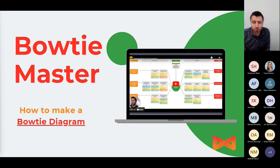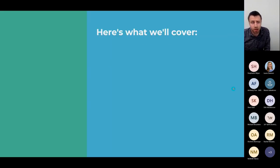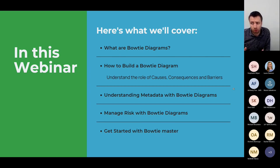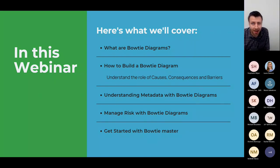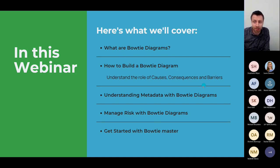I know that you'll get a lot out of what we've got in store, so please ask any questions into the Q&A or into the chat and I'll pick these up at the end. Here's our run through of the day: we're going to dive straight in and build a bowtie diagram, then look at how metadata can be used to further enhance bowties, how you can manage your risk by looking at various consequences, and how to get started with Bowtie Master.